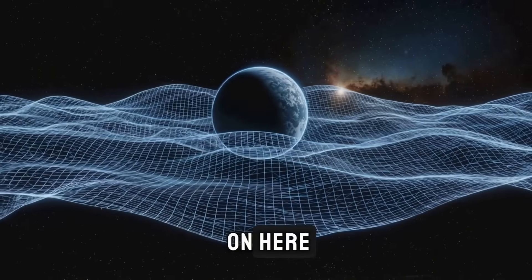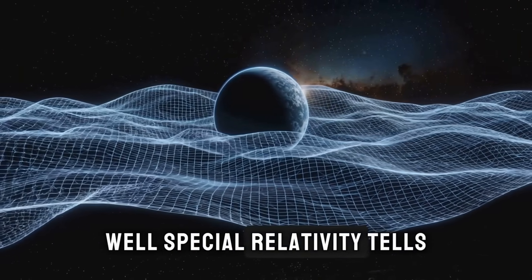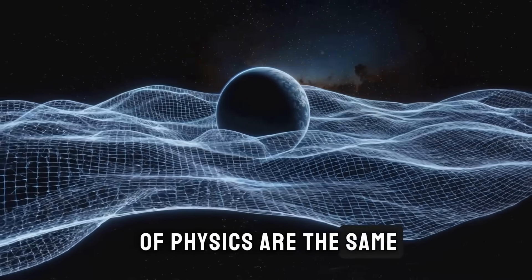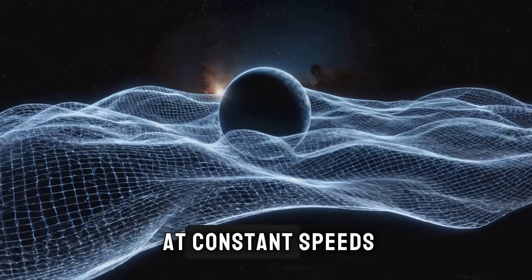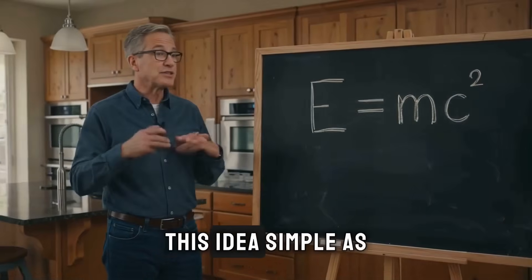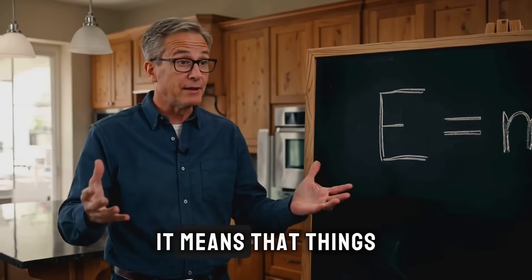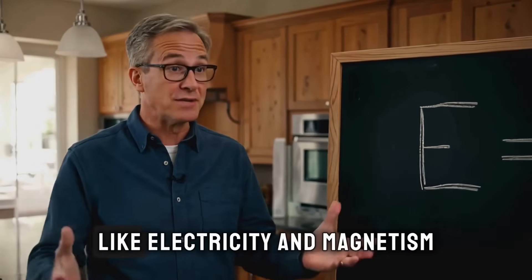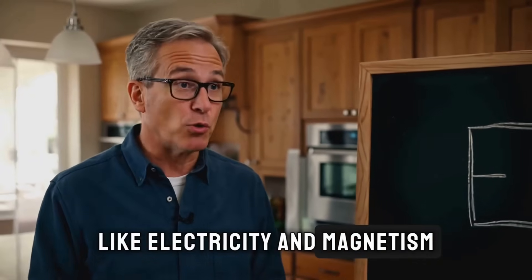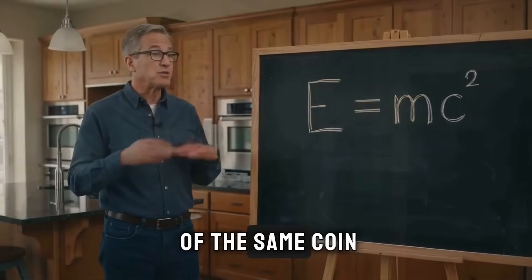So what's really going on here? Well, special relativity tells us that the laws of physics are the same for all observers moving at constant speeds. This idea, simple as it sounds, has profound implications. It means that things we thought were separate, like electricity and magnetism, are actually two sides of the same coin.